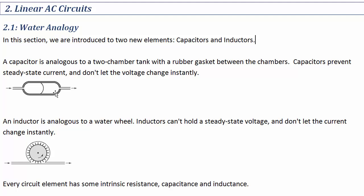As current goes into one side of this tank, it'll move the gasket over to the right, which works to force back to the middle, counteracting the pressure causing the current to flow in. In voltage terms, as charge flows into a capacitor, it increases the voltage on the capacitor, and that eventually will stop the flow of charge — it overpowers the potential difference that was causing charge to flow into the capacitor in the first place.